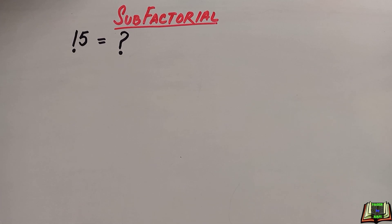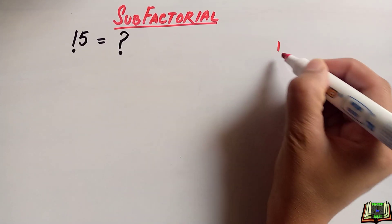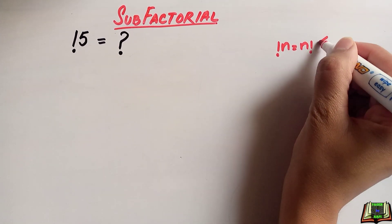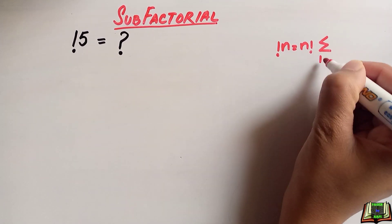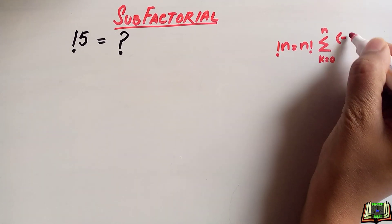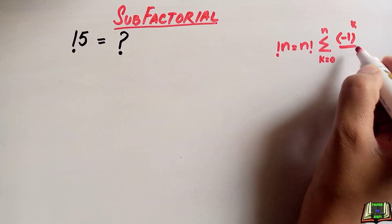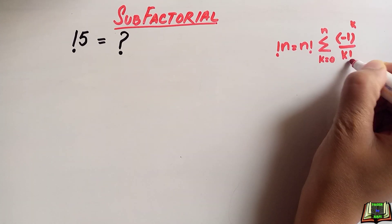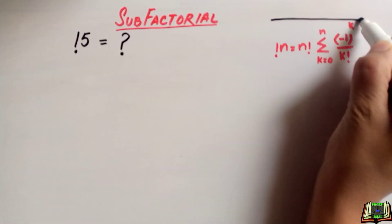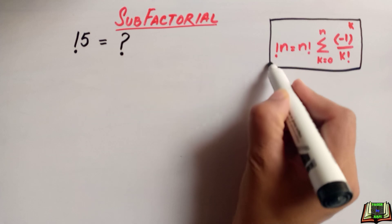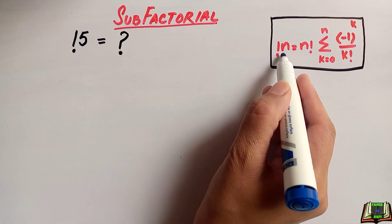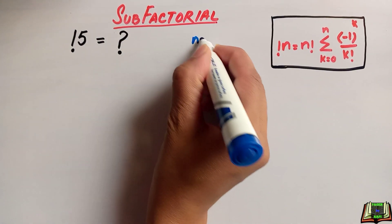There is a formula to find the sub-factorial of any number n: sub-factorial of n equals n factorial times the sum (sigma) from k equals 0 to n of minus 1 to the power k over k factorial. This is the sub-factorial formula we are going to use. There are some other variations, but this one is more relevant and useful.